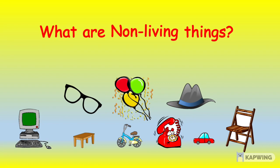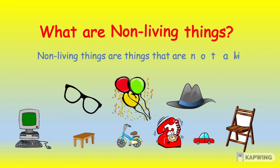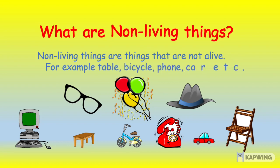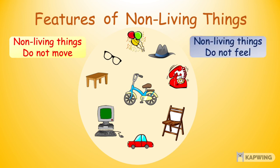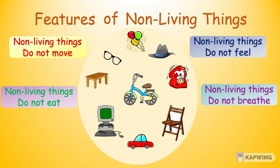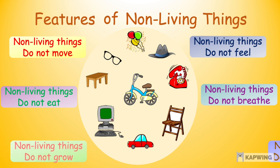What are non-living things? Non-living things are things that are not alive. For example, table, bicycle, phone, car, etc. The features of non-living things are: non-living things do not move, they do not feel, they do not eat, non-living things do not breathe, they do not grow, and non-living things do not reproduce.